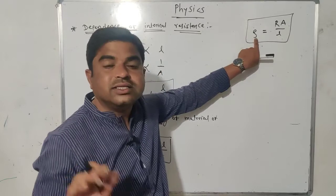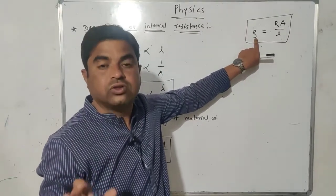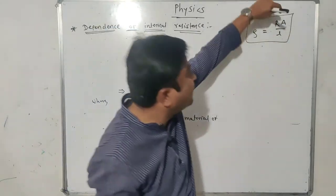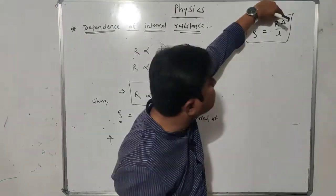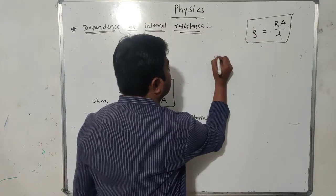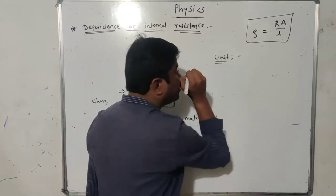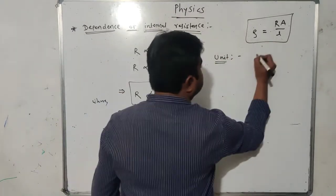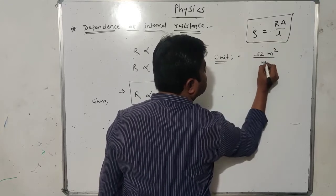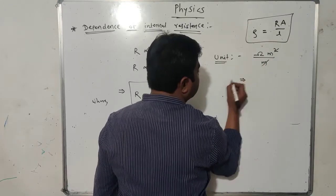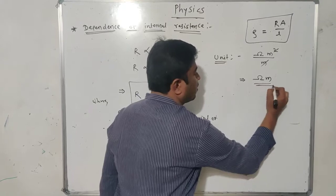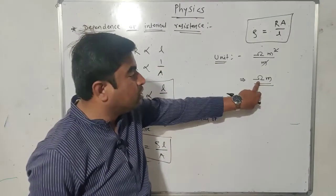This is how we calculate the specific resistance or resistivity. Resistivity of a material of any wire having internal resistance R, cross-sectional area A, and length L is given by ρ = RA/L. From this equation, the unit of resistivity is: unit of resistance is ohm, unit of area is meter squared, and unit of length is meter. Therefore, the unit of resistivity is ohm·meter.